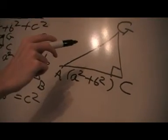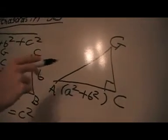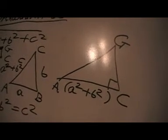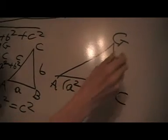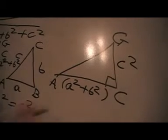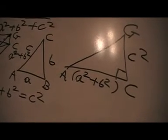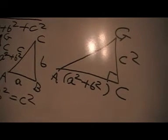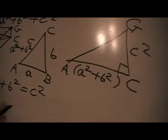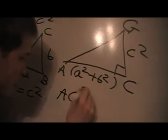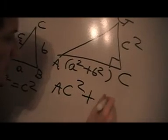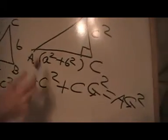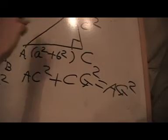And this length going up, we're gonna call that c squared, and then we want to find this length here. So using Pythagoras, then we're gonna have AC squared plus CG squared is equal to AG squared, because these are the lengths here: that's AC, that's CG, this one's AG.